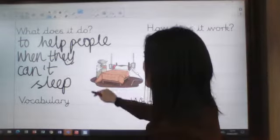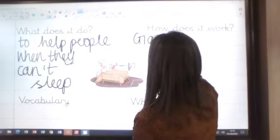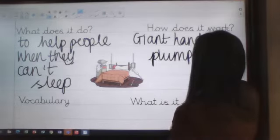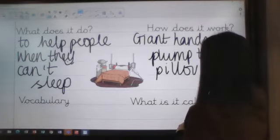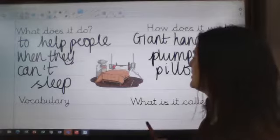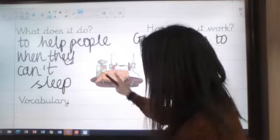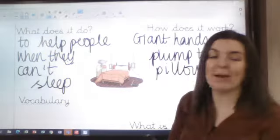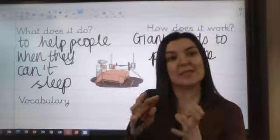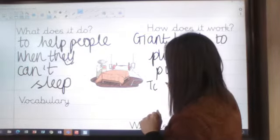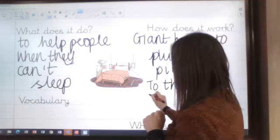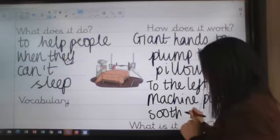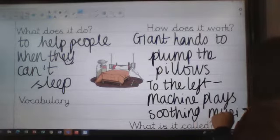So think about what each little part does. So how does it work? So I might say something like these hands here. It's got giant hands. It's got giant hands to plump the pillows. So it's got giant hands that come out and plump the pillows. So I might say that about mine. It's got a machine here. I'm just going to move this down a little bit. So it's got a machine here. So I might think about what kind of things that that does. So you've got to be precise when you start to explain it. So to the left, there's a machine. So machine plays soothing. So I'm thinking about my vocabulary here. So the machine plays soothing music.